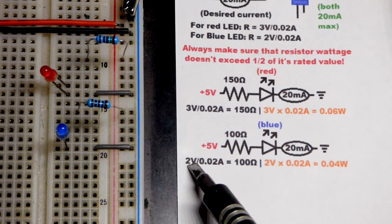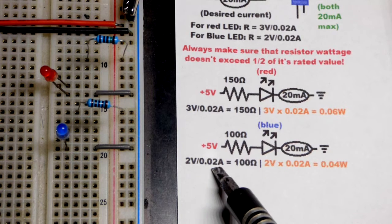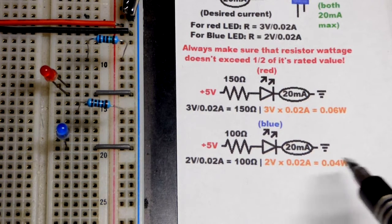For the blue LED, again same formula but now it's 2 volts because the blue LED drops more voltage from the resistor. 20 milliamps. We got 100. And it will be a little bit cooler.